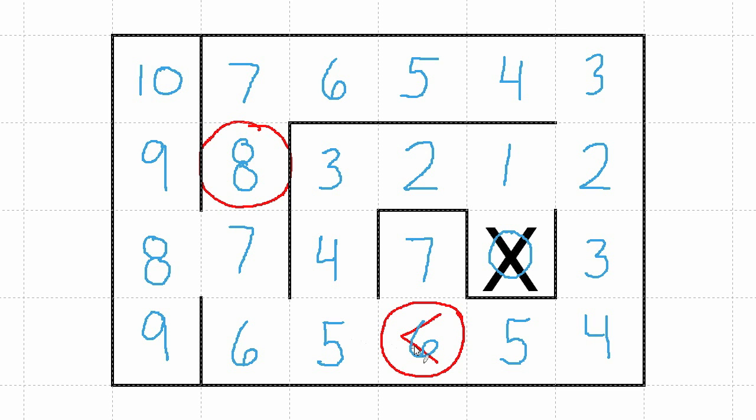Unfortunately, what happens with the function that we wrote is it looks north, sees a 7, looks east, sees a 5, decides that east is the way to go because 5 is less than 7, looks south, sees a wall, doesn't even consider that, and then looks west and doesn't really consider west because 5 is equal to 5 and we're looking for something that's less than 5.